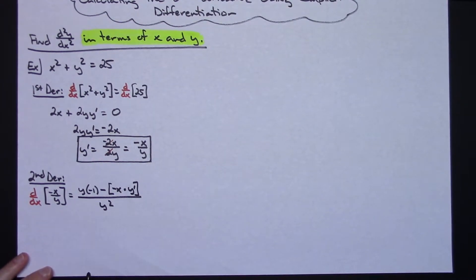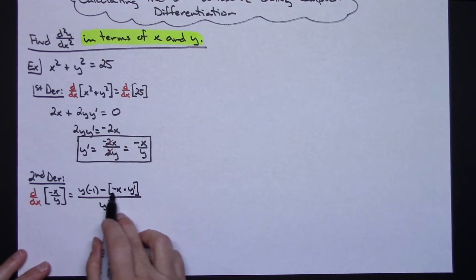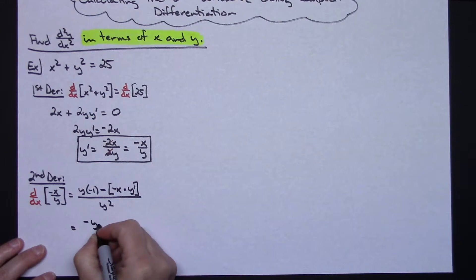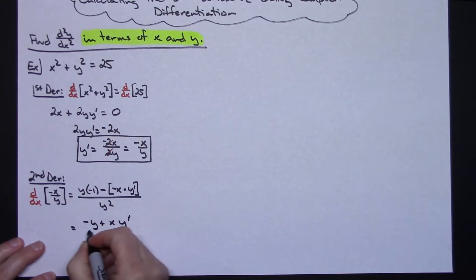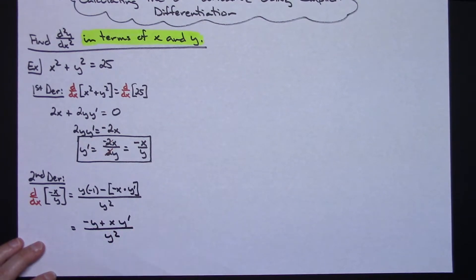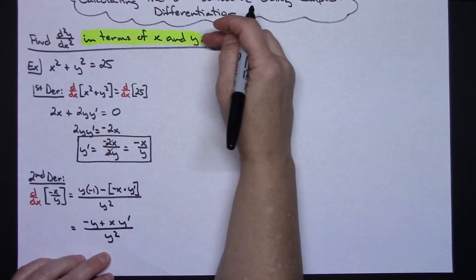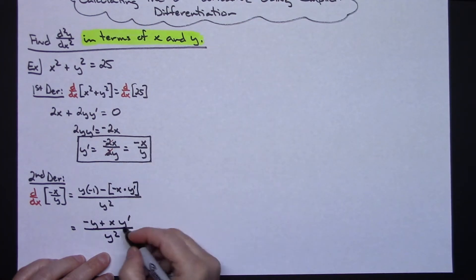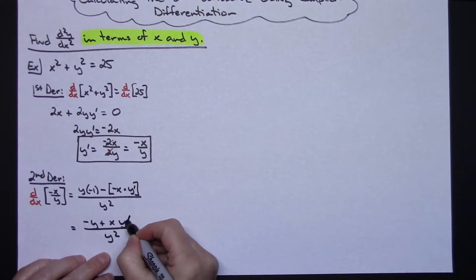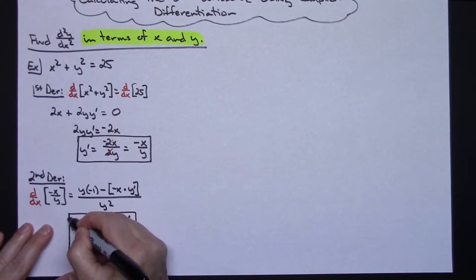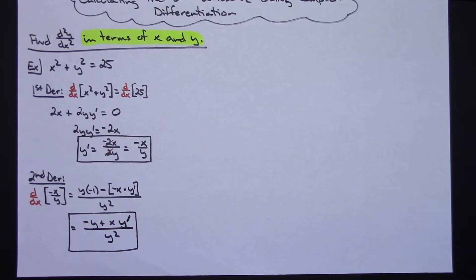If I attempt to clean this up a little bit, the negative times negative x gives a positive, so I'm going to have negative y plus x·y' all over y². Now that second derivative by itself wasn't too bad, but this derivative is not in terms of x and y as the directions said, because I've got this y' sitting here. So let's box this in as our second derivative — now I've got to do some substitutions to get it in terms of just x and y.